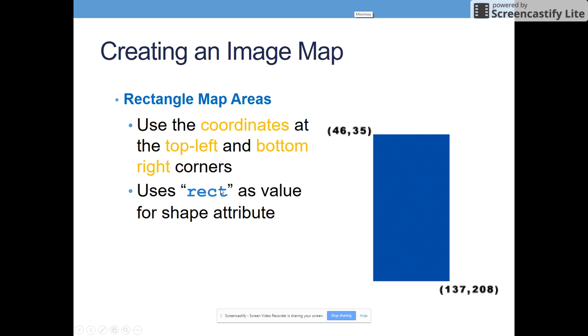And then you'll use rect as the value for the shape attribute. And that will make a little bit more sense when we start actually writing out our map and area tags when we start making these image maps. But note that for a rectangle, you just need two key coordinates. The upper left-hand corner and the bottom right-hand corner.